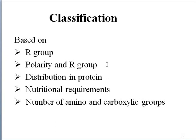Amino acids are classified in the following ways: based on R group, based on polarity and R group, distribution in protein, nutritional requirements, and number of amino and carboxylic groups.